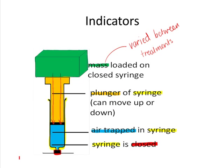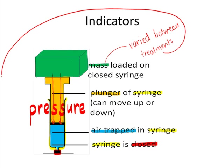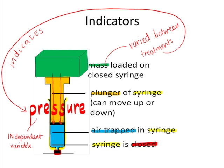So in this investigation, what is it that we are varying between treatments? The mass that we load on the syringe differs. But that's not actually the variable we're really interested in — that's just an indicator of the real variable. The real variable we're interested in is the pressure exerted on the air. We use the mass loaded on the syringe to tell us about that pressure. So in fact, our independent variable is the pressure exerted on the trapped gas.